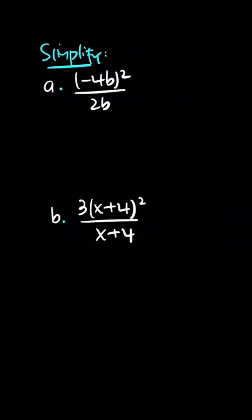Let's solve this question. So we have to simplify algebraic fractions. We have here (-4b)² in brackets over 2b.